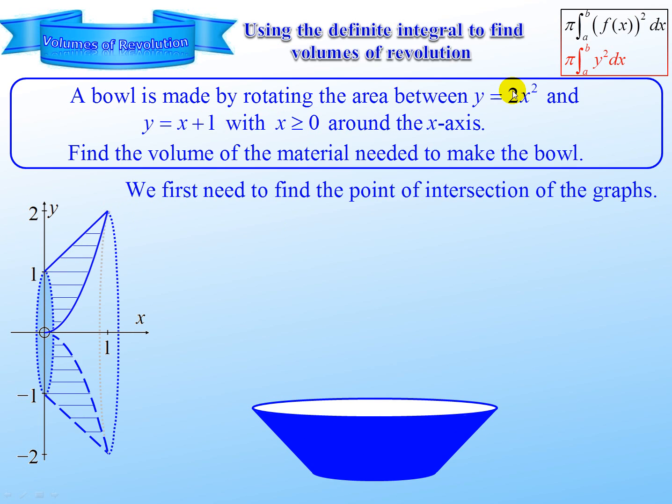So now first thing we need to do is find that point of intersection. So we equate 2x squared to x plus 1, seeing that they're both equal to y. And if we solve, we actually get x equal to negative half or 1. Negative half because the parabola continues on this side and intersects with the straight line on the left of the y-axis. But we are only interested in the positive values.